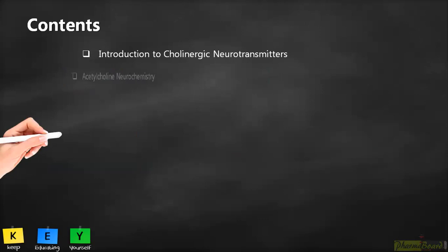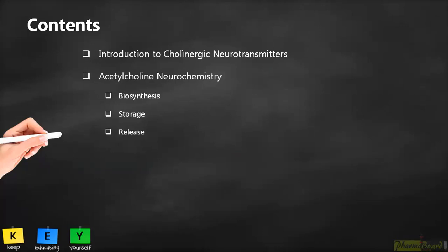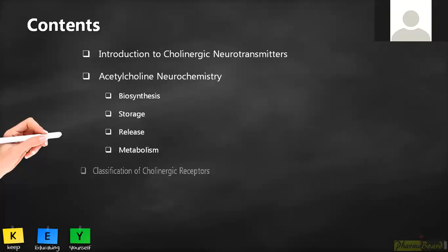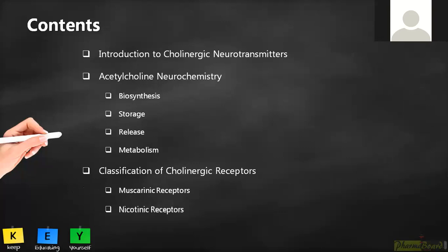The contents include the name of cholinergic neurotransmitters, how they are synthesized, followed by acetylcholine neurochemistry — that is, its biosynthesis, storage, release, and metabolism. Then, the classification of cholinergic receptors, including muscarinic receptors and nicotinic receptors.